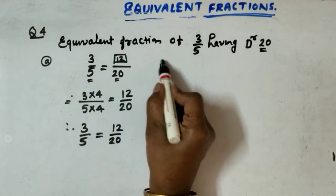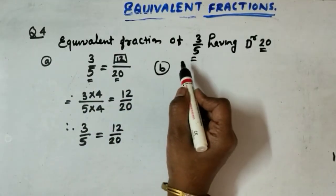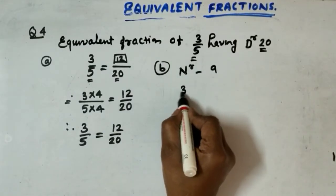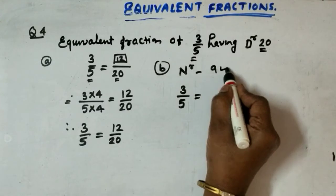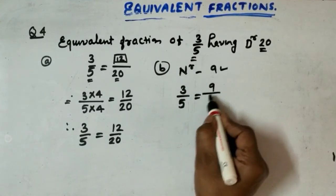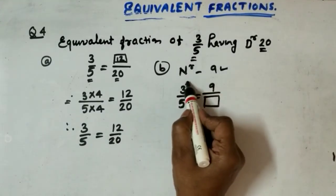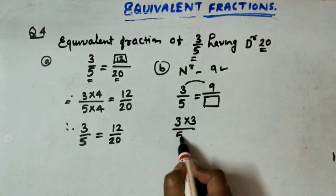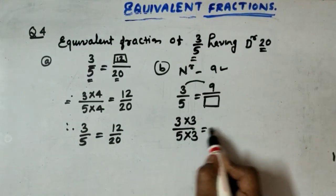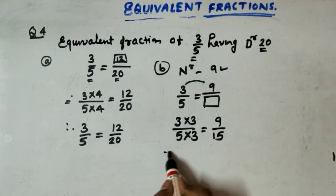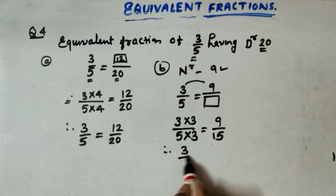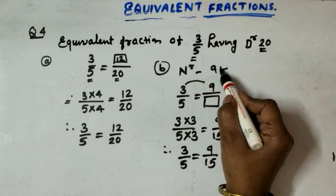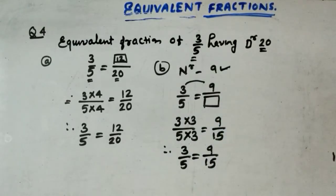Now the B question, we are having same 3 by 5 and they asked us numerator 9. The same way you have to adjust first 3 by 5, numerator 9. Write in numerator 9, in the denominator we have to find. See the relation between 3 and 9. 3, 3's are 9. So write here 5, 3's are 15. Therefore, 3 by 5 is equal to 9 by 15. Once you check, we want numerator 9, we got numerator 9.